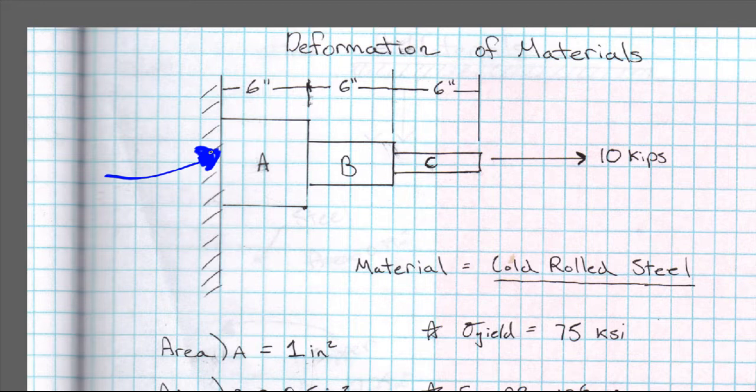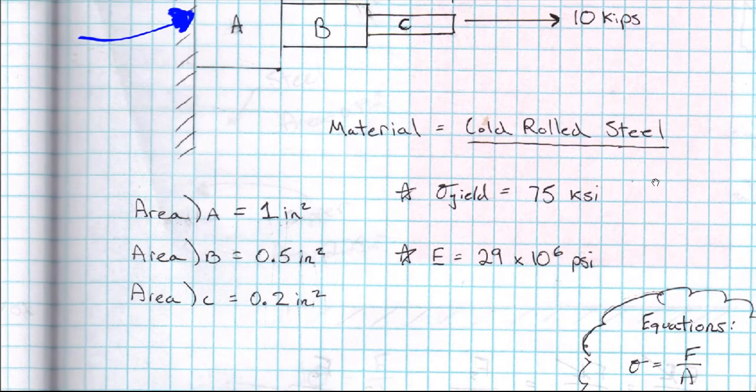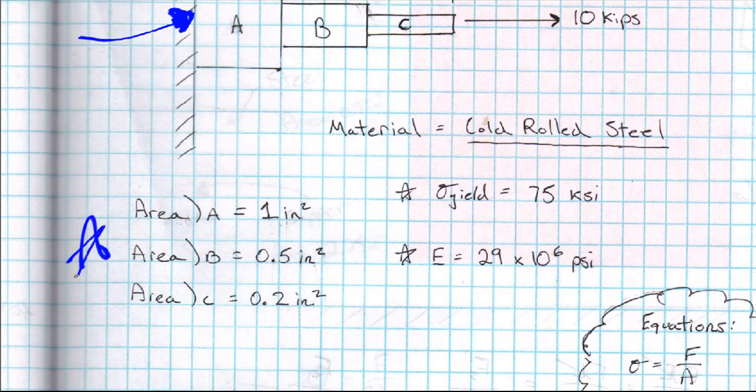And then as we have A connected to B and then B connected to C, and then C's also feeling that 10 kip force there. I just made up a material, so I assumed cold rolled steel and I gave us some areas which can be referenced over here.